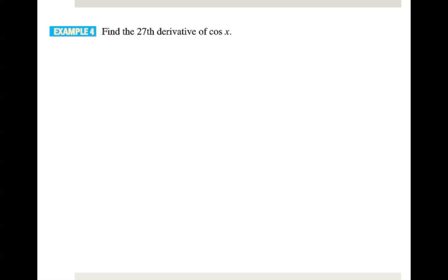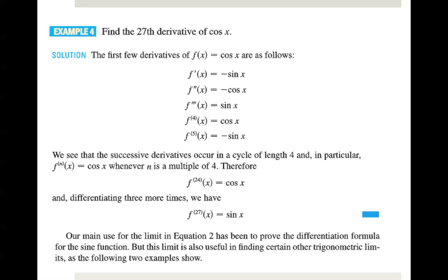Find the 27th derivative of cosine x. Here's how this works. The first few derivatives of f(x) equals cosine x are as follows. First derivative, negative sine x. Second, negative cosine x. The third, sine x. The fourth, cosine x. And then at 5, we're back at negative sine x. Therefore, we see that the successive derivatives occur in a cycle of length 4. And in particular, the nth derivative of x equals cosine x, wherever n is a multiple of 4. Therefore, the 24th derivative equals cosine x. So if we want to get to 27, which is 25, 26, 27, 3 above this, we could go here and go 1, 2, 3, and we get back to sine of x.